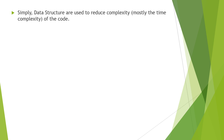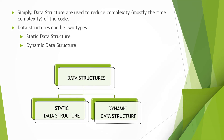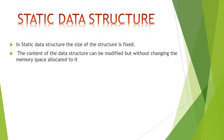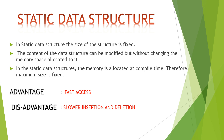Data structures are also used to reduce complexity of code. Data structures can be of two types: static and dynamic. In a static data structure, the size of the structure is fixed. The content can be modified but without changing the memory space allocated to it. Memory is allocated at compile time, so the maximum size is fixed. The advantage is fast access and the disadvantage is lower insertion and deletion performance. An example is the array, since we have to fix the size before runtime.